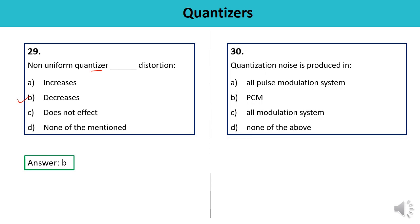Question 30: Quantization noise is produced in — all pulse modulation systems, PCM, all modulation systems, or none? Quantization noise is strictly produced in the case of pulse code modulation, PCM. The answer is B.